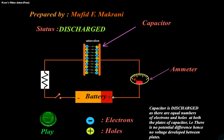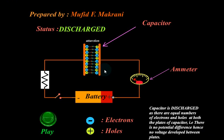Hello friends, let's understand the charging phenomena of a capacitor with the help of this animation. Initially the capacitor is discharged, as there are equal numbers of electrons and holes on both the plates. The ammeter shows zero deflection as there is no flow of current.